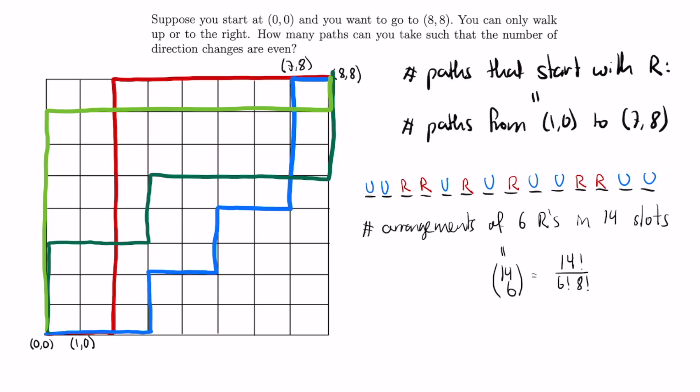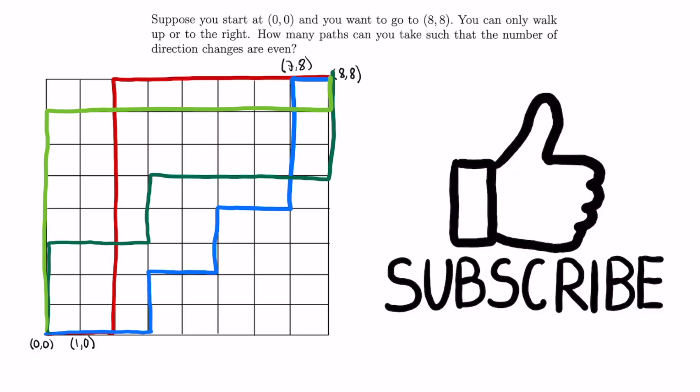Alright, so as said before, to get the total number of paths, we just have to multiply by 2 to account for the paths that start and end with U's, which means that our final answer is 2 times 14 factorial divided by 6 factorial times 8 factorial, which is precisely 6006. Thanks. Subscribe for more.